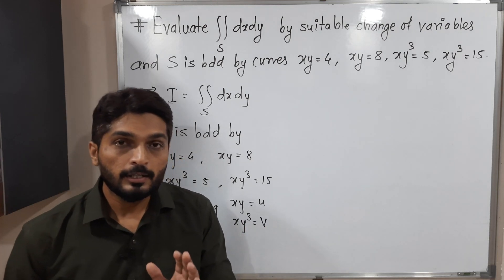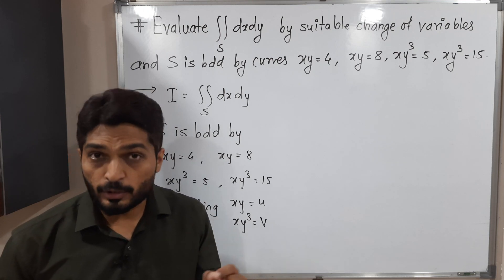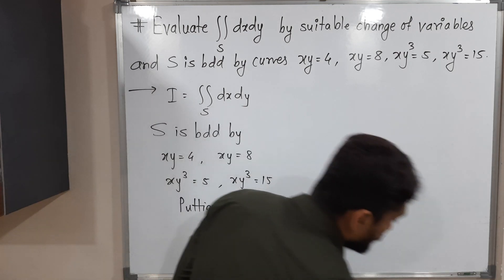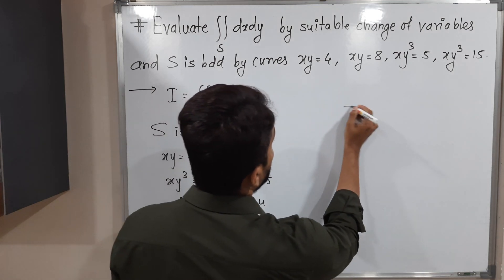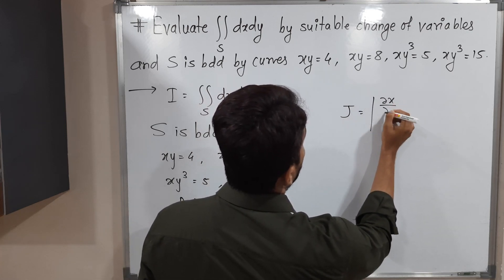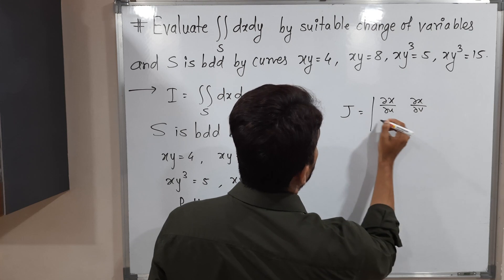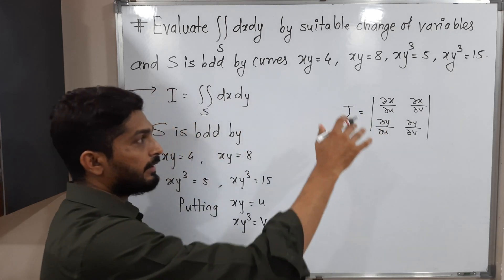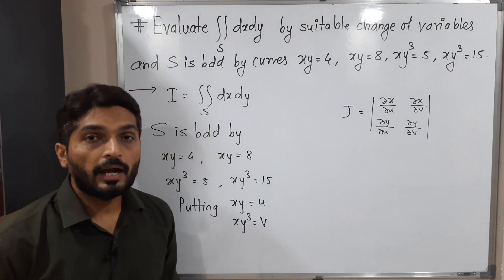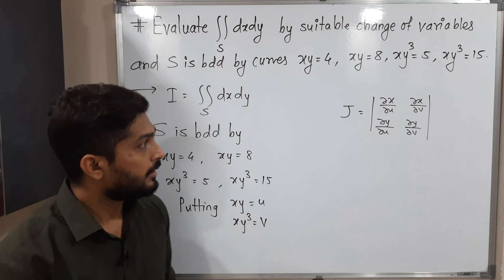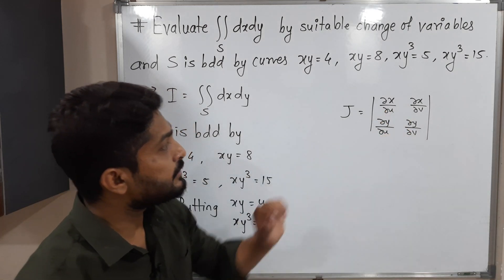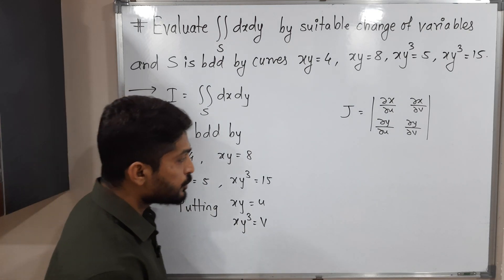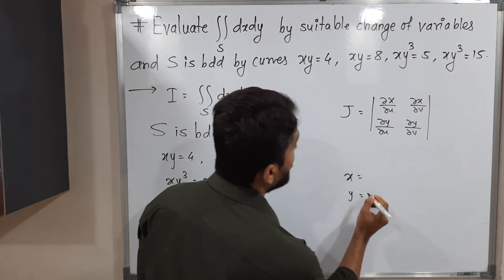In the case of double integration, when we use any substitution, we are supposed to find the Jacobian J first. The formula for J is the determinant of ∂x/∂u, ∂x/∂v, ∂y/∂u, ∂y/∂v. We have to find these four partial derivatives. For that, we need to express x and y in terms of u and v, but right now we have u and v in terms of x and y, which is a difficult task.